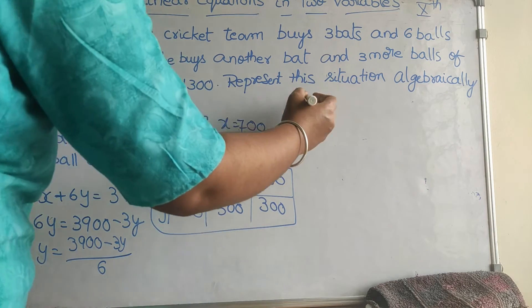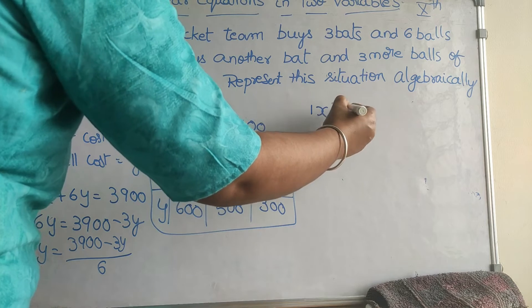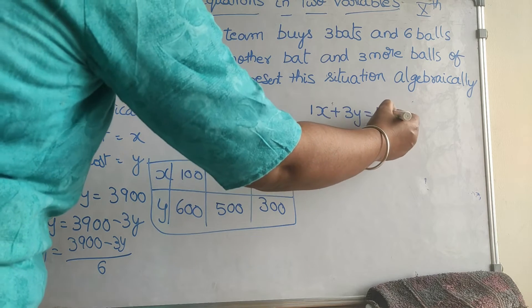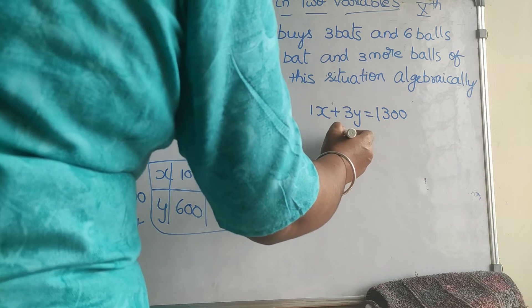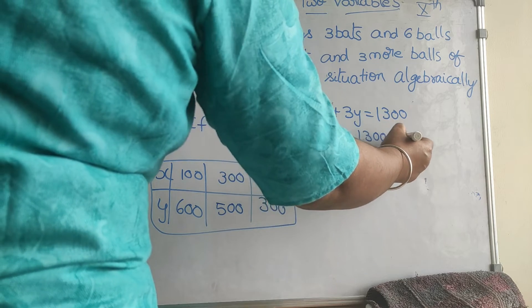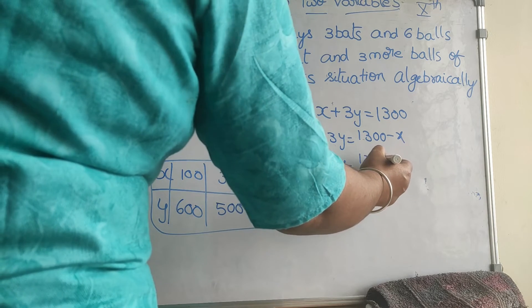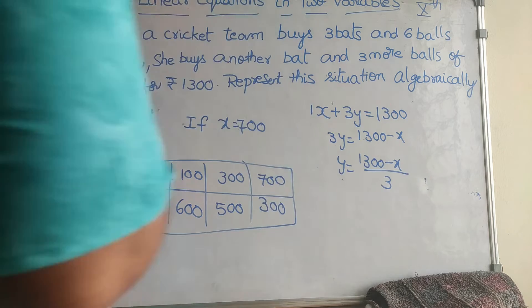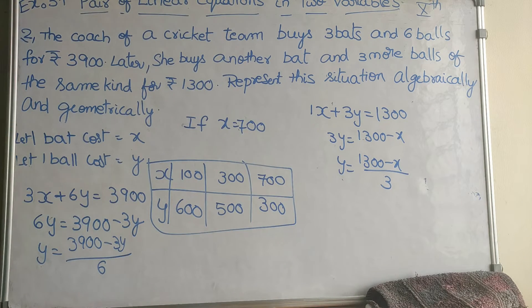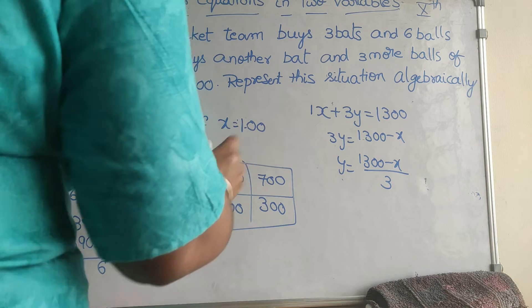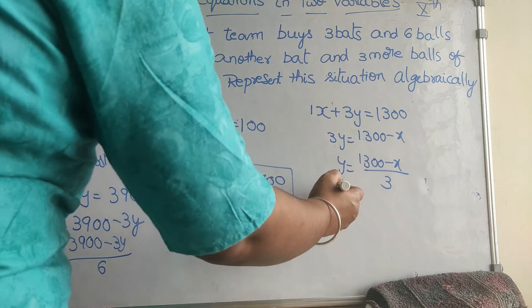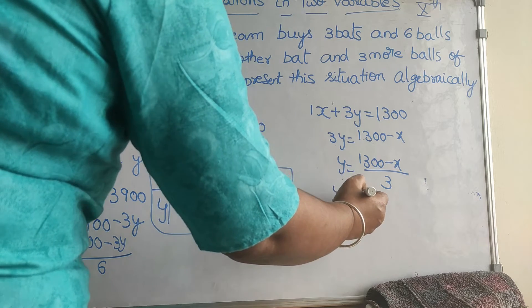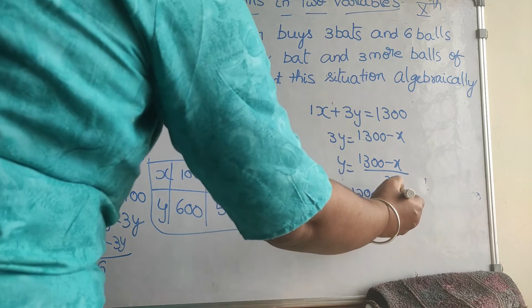For the second equation, one bat plus three balls equals 1300, so x + 3y = 1300. Rearranging: 3y = 1300 − x, so y = (1300 − x) / 3. If x = 100, then y = 1200 / 3 = 400. So when x is 100, y is 400.